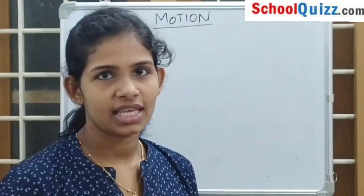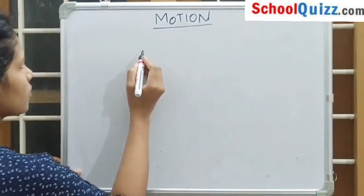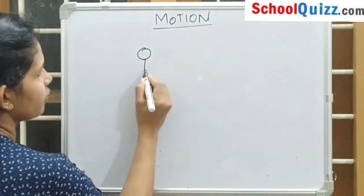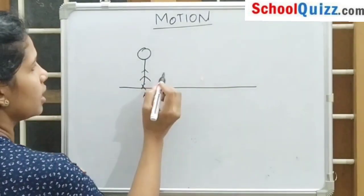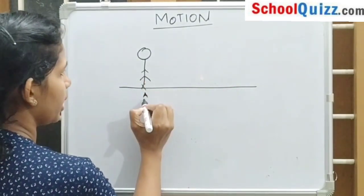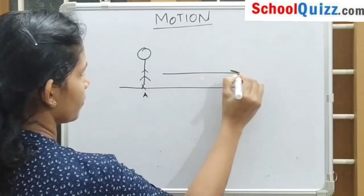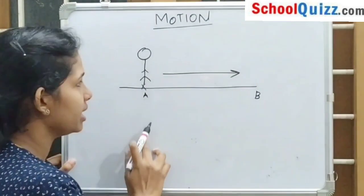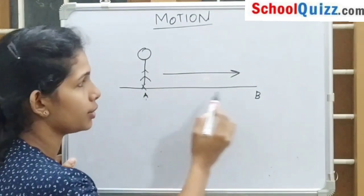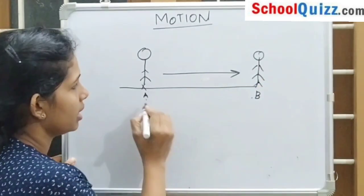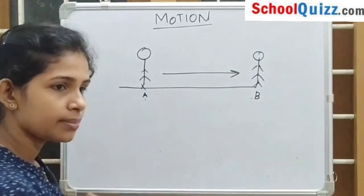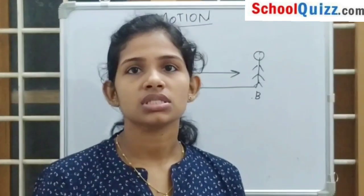What is motion? A changing position of a body is known as motion. Let's see with an example. If a man is standing at point A, then he moves from point A to B. His position changes from point A to B. Now he is at point B. So we can simply say that changing position is known as motion.